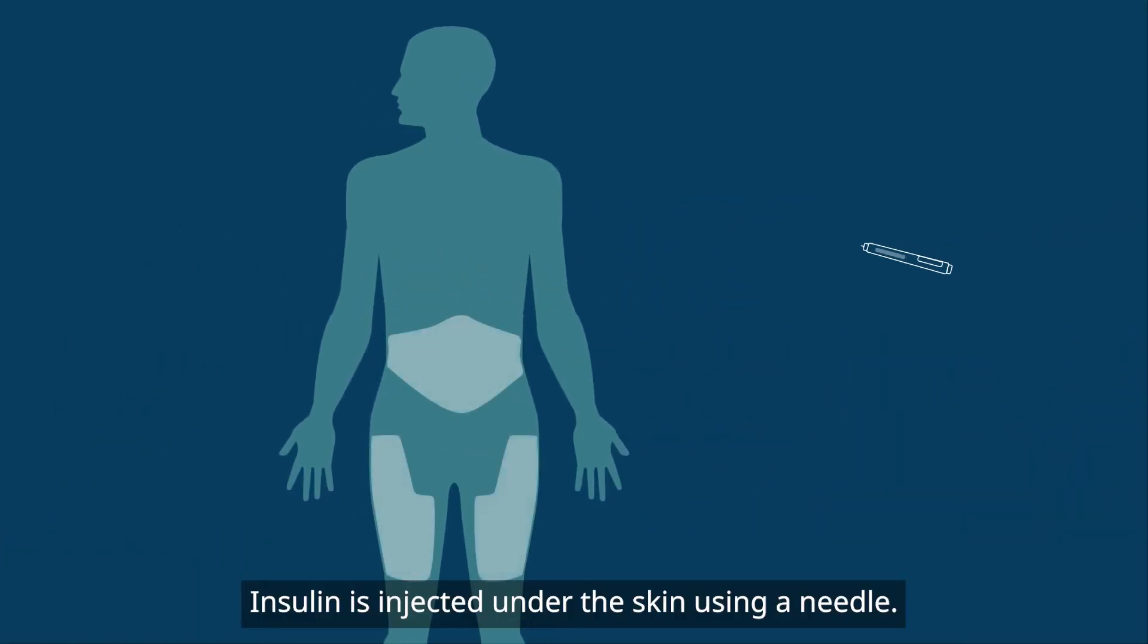How is insulin administered? Insulin prescribed for patients is usually man-made. Insulin is injected under the skin using a needle. It can be injected into the abdomen, upper arms, buttocks or thighs.